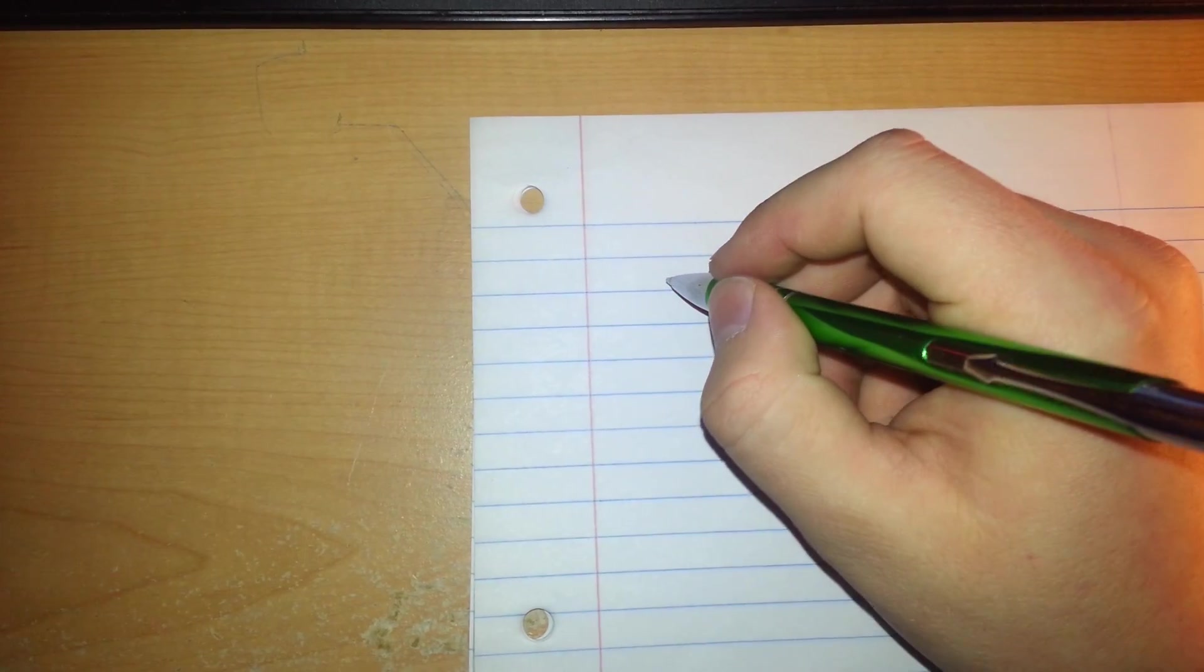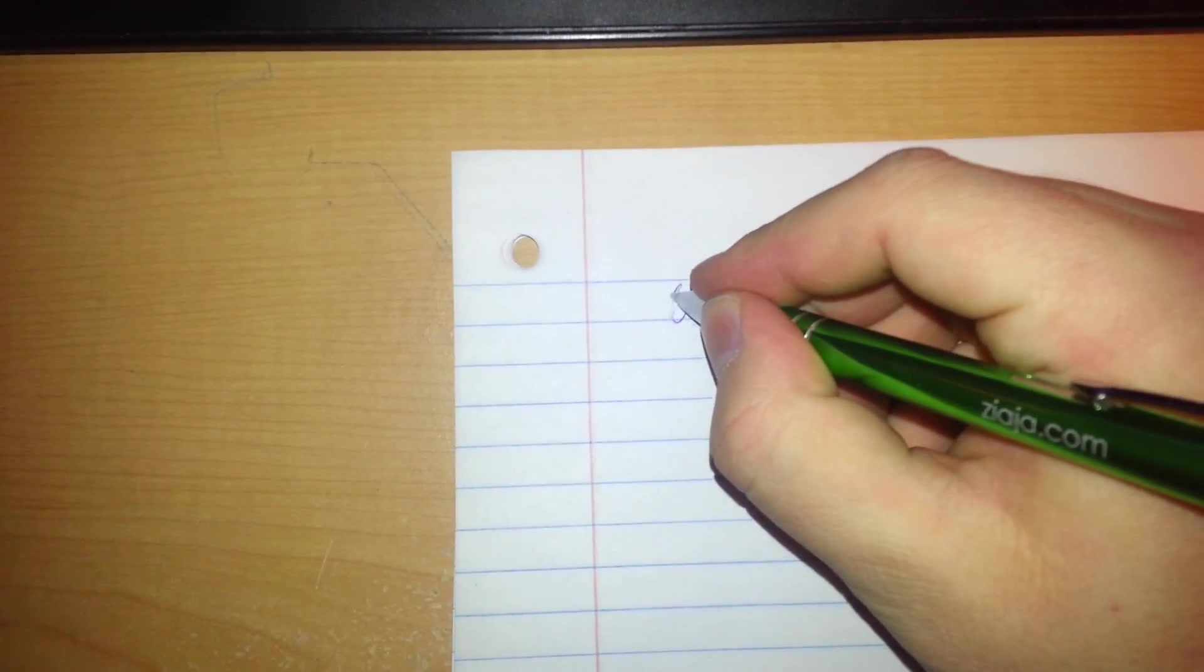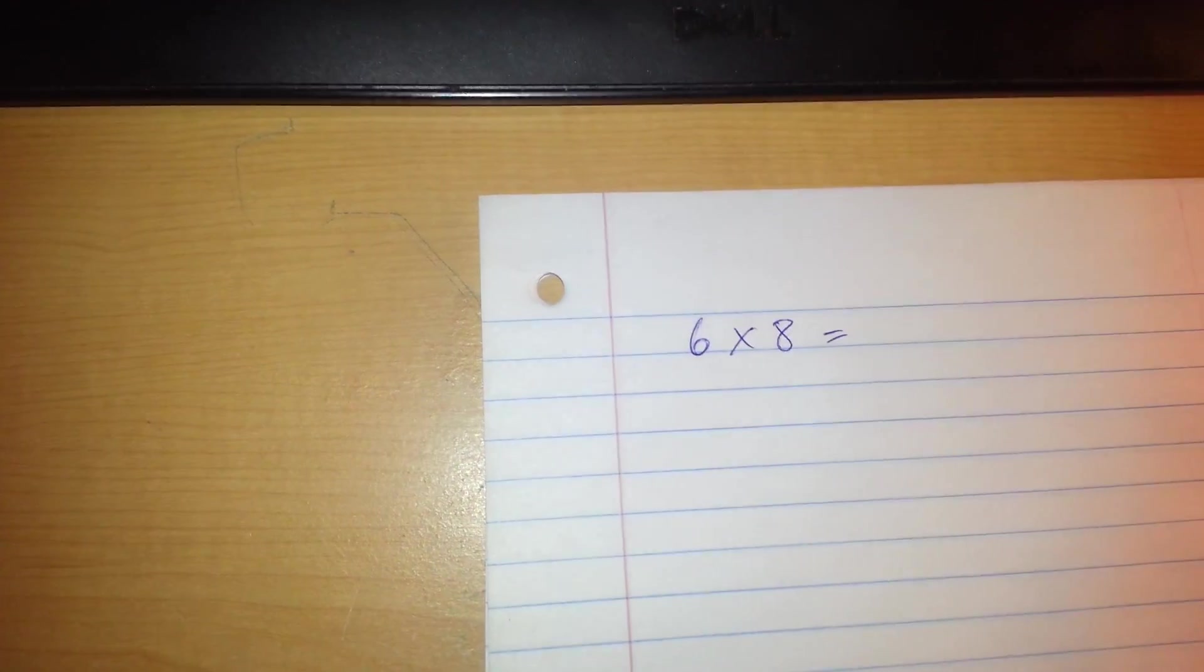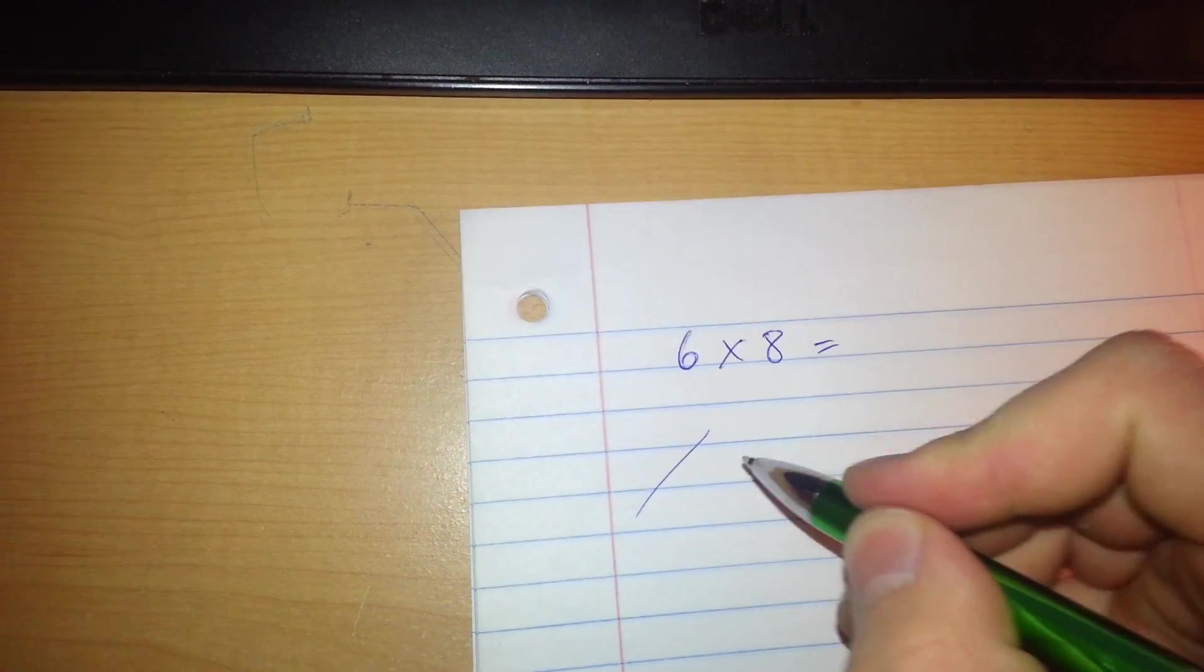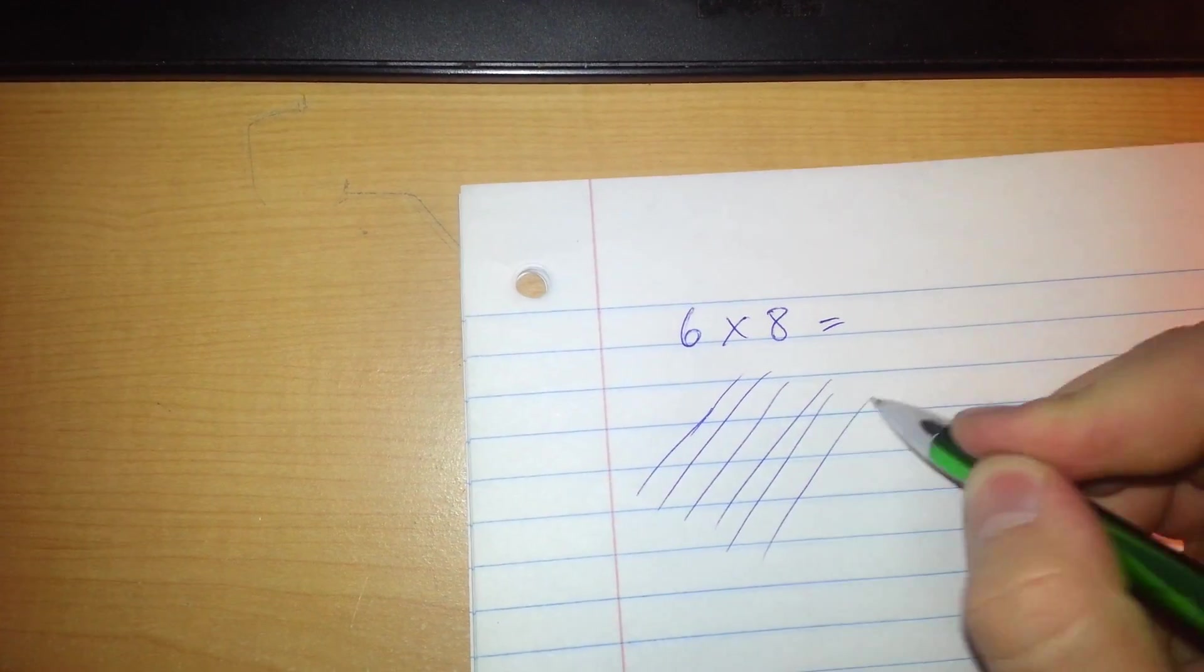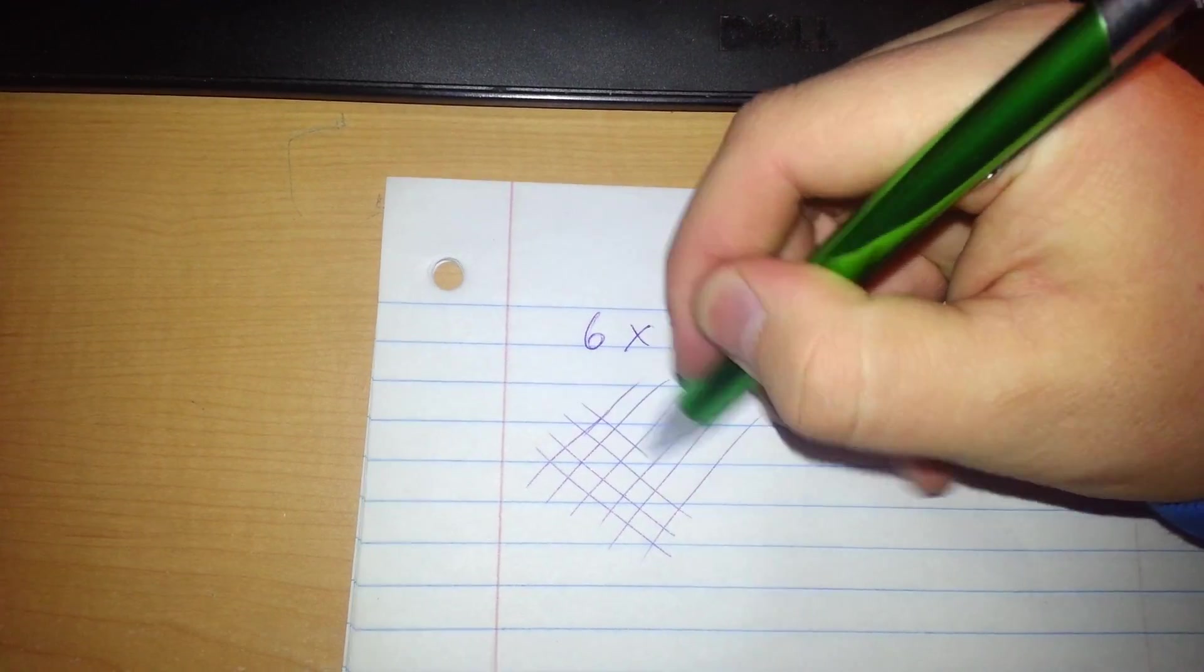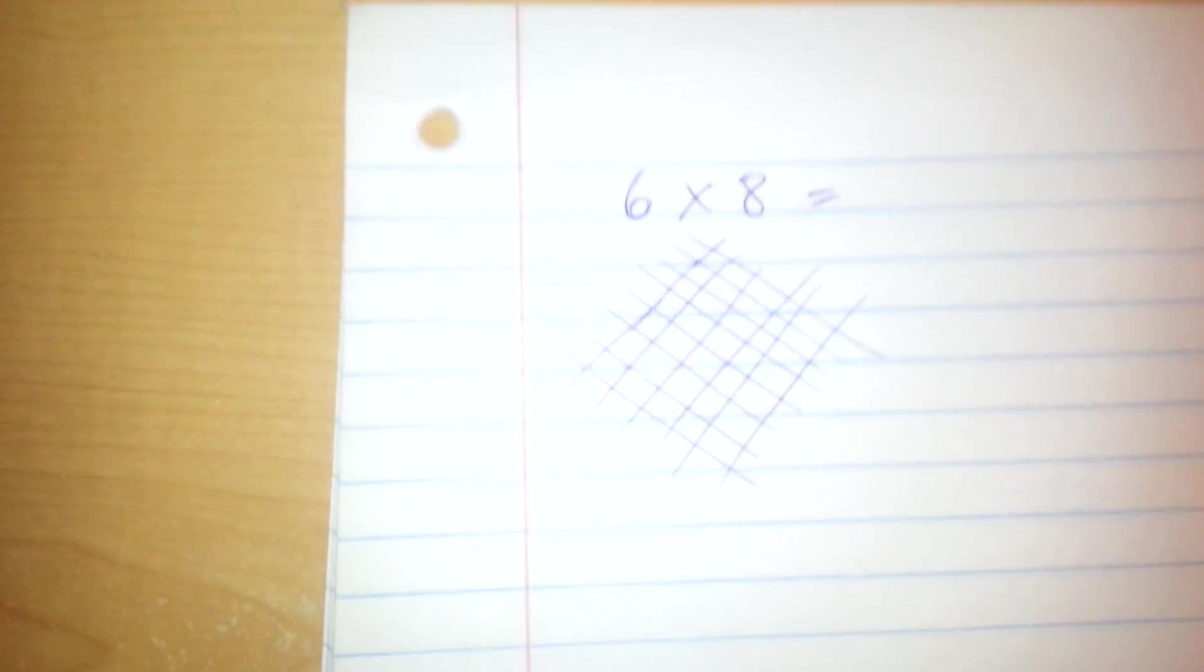Let's say you take 6 times 8 equals and you can't do it in your head, you don't have a calculator. This is the best way to do it. You draw six lines this way: one, two, three, four, five, six. And then eight lines this way: one, two, three, four, five, six, seven, eight.